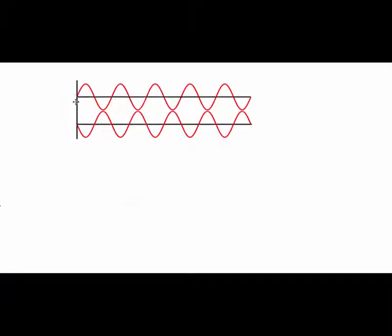Here we have two waves. Again, they have the same frequency, but this time they are out of phase with each other by one half wavelength — 180 degrees. So when this wave has a peak, this wave has a trough, and vice versa: when this one has a trough, this one has a peak. They both cross zero at the same point.